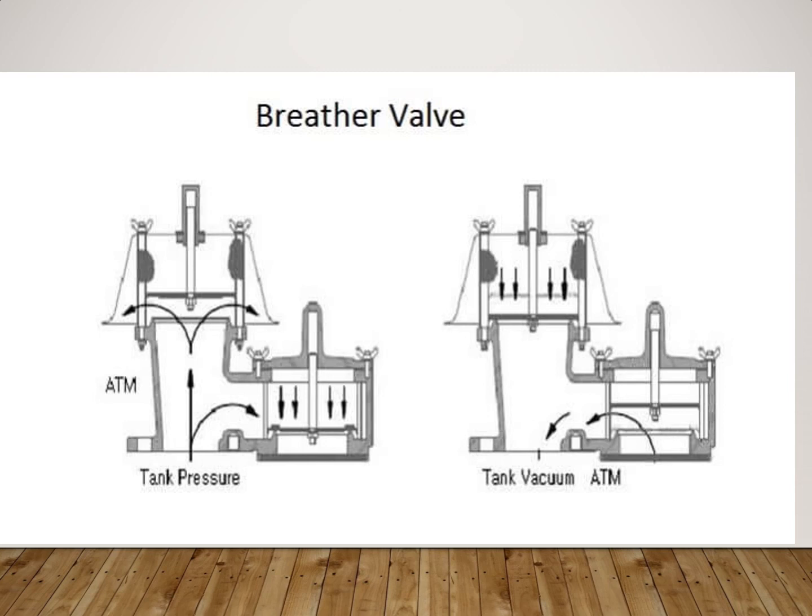The breather valve can be operated for pressure-only condition, vacuum-only condition, and combined pressure and vacuum conditions. The pressure and vacuum sides of the valve have a pallet or diaphragm assembly which rests on the o-ring seal to prevent leakage. The weight of the pallet pushes the diaphragm against the seat to keep it in the closed condition. Hence, the breather valve prevents build-up of excessive pressure which can unbalance the system or damage the storage vessel.